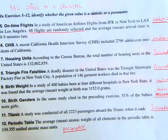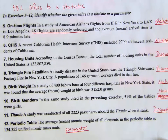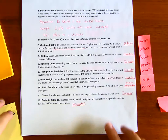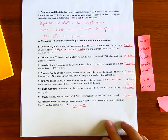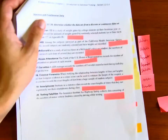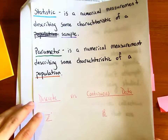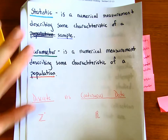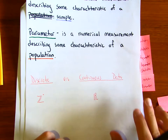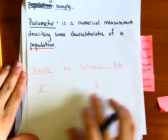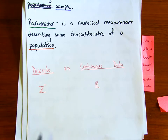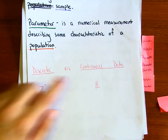Let's double check — those were the correct solutions for exercises 5 through 12. We're done with statistic and parameter. For the next part, we have discrete and continuous data. If you know what these symbols represent, that's a big thumbs up — they're not really shown in high school.